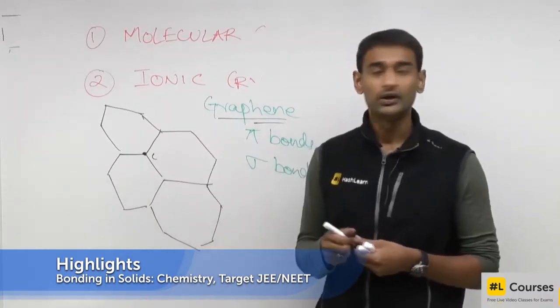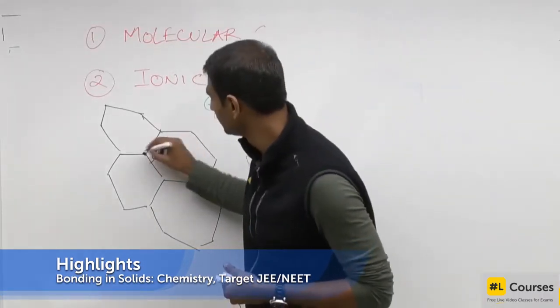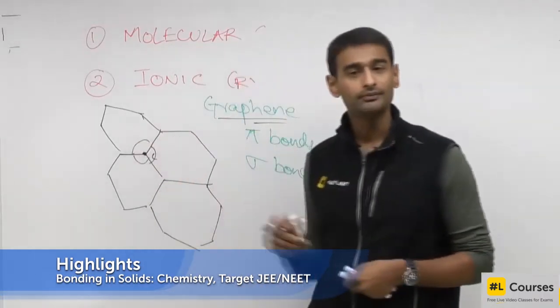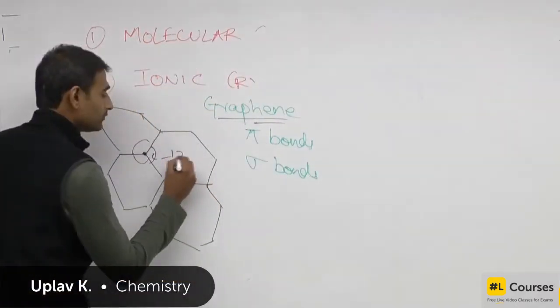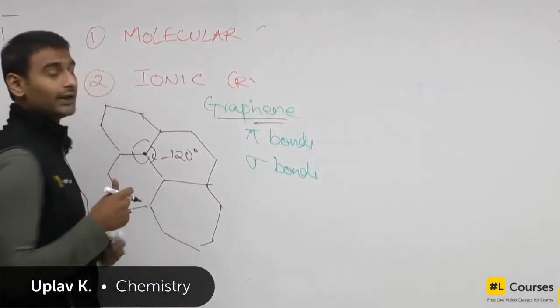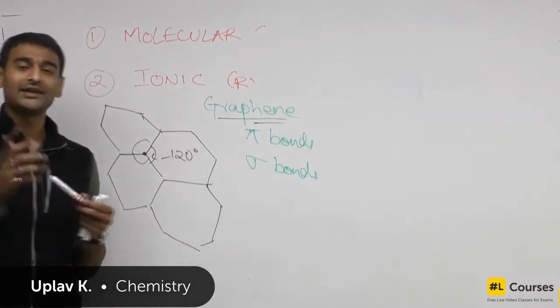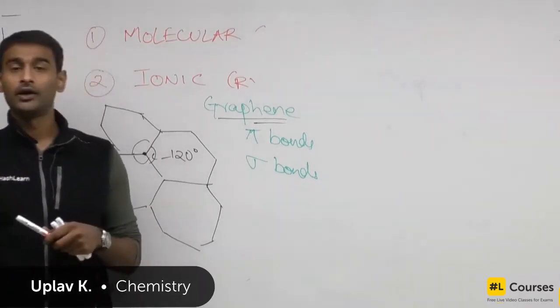Now what is the bond angle between them? The bond angle between them is 120 degrees. So if you have a central atom which is surrounded by three bonds and all of these three bonds are separated by 120 degrees, it is a better stable configuration, right?